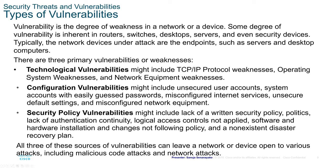If network resources can be physically compromised — meaning a threat actor can simply walk into a server room with no security — they can deny use of network resources. This is why companies like Microsoft and Google have armed guards on their server farms. The four classes of physical threats are hardware threats, environmental threats, electrical threats, and maintenance threats.